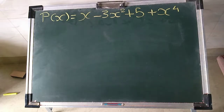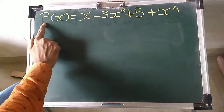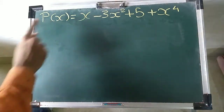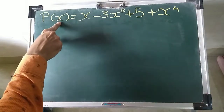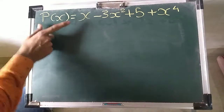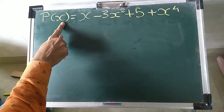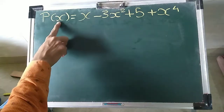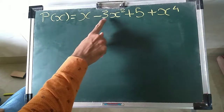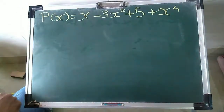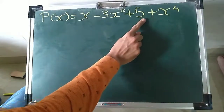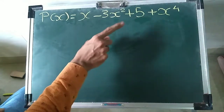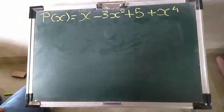Let us observe this polynomial. What I have written is p of x — this is read as p of x. In this chapter, this means 'polynomial in a variable x.' This is a notation to write a polynomial. If there is some polynomial with a variable y, you can write p of y. For the polynomial x minus 3x squared plus 5 plus x raised to 4, we can verify it is a polynomial because the power of each variable is a whole number: power 1, power 2, power 0 (no variable written), and power 4.